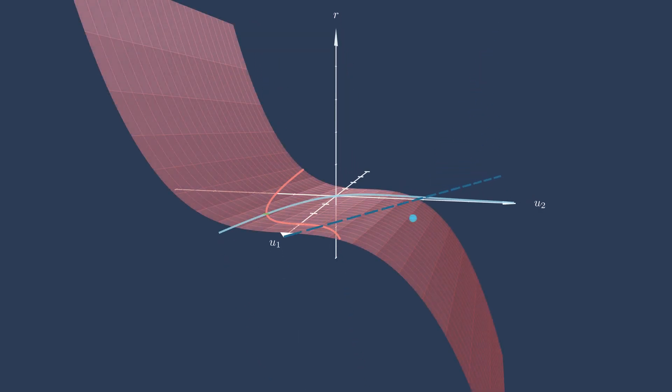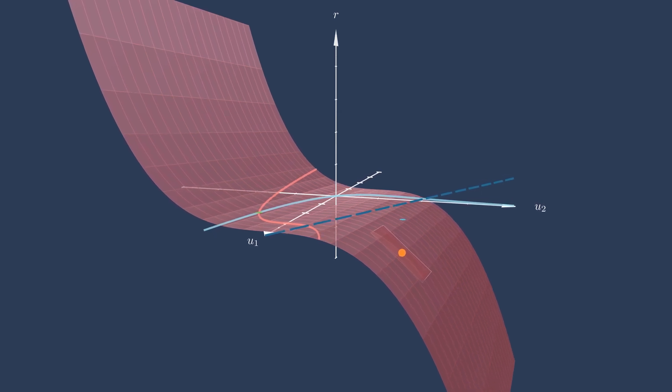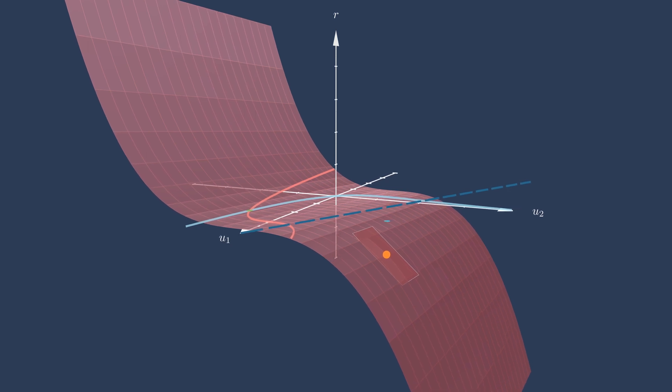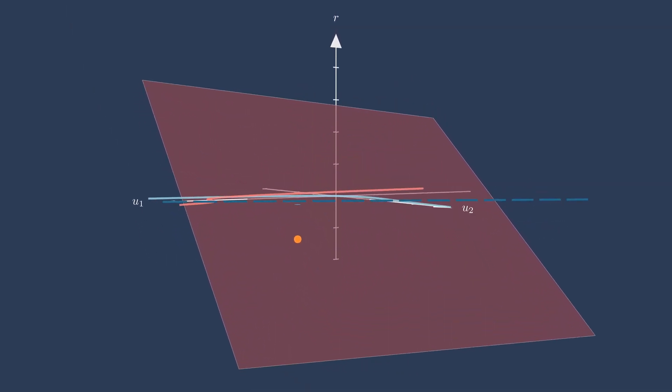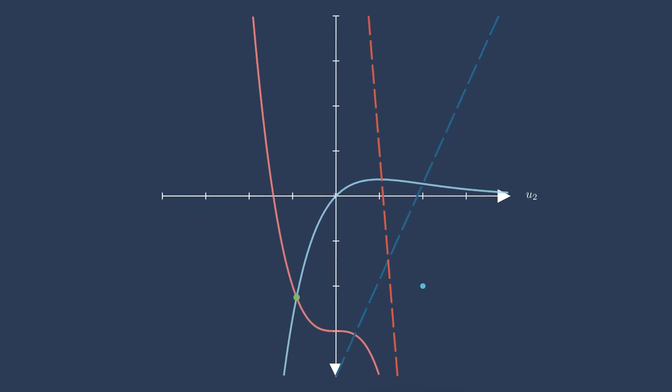We repeat the same process with the second residual that we did with the first. A linear approximation of the second residual is built around the current guess. That linear approximation has a residual value of zero along this line.